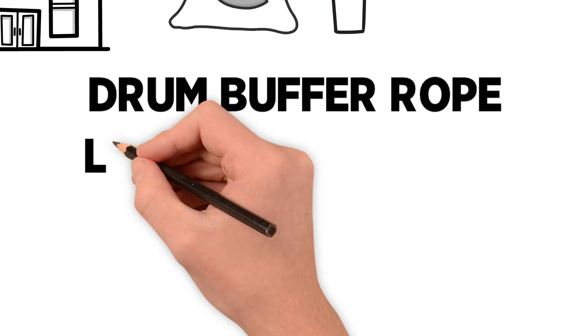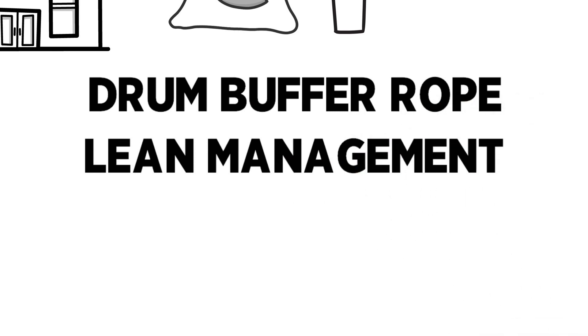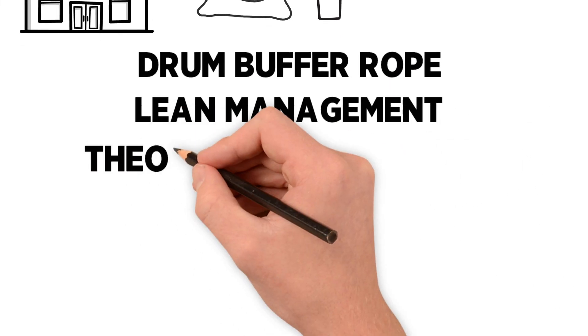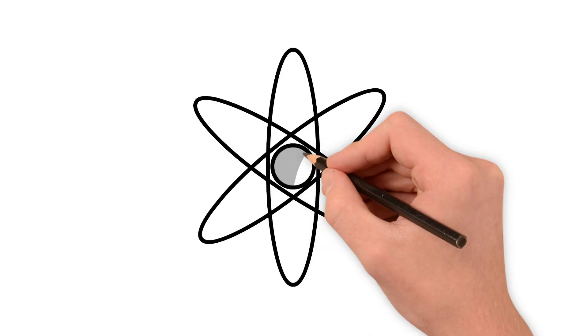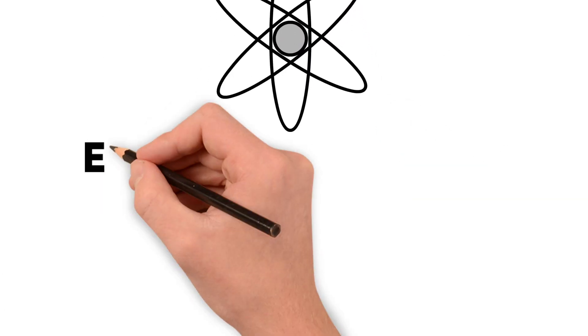The drum buffer rope concept is a concept of lean management. It's built on the theory of constraints. The Israeli physician Eliyahu M. Goldratt founded the theory in the 1970s.